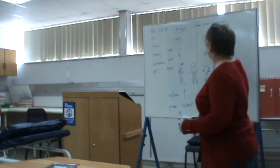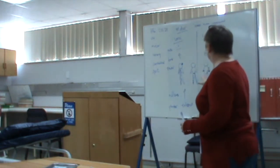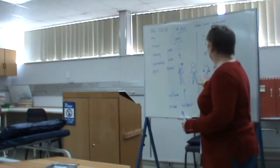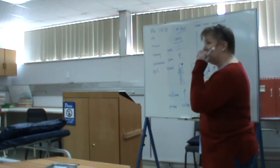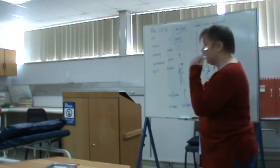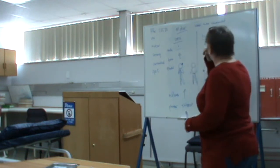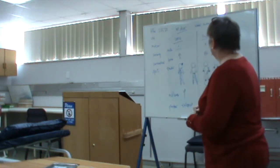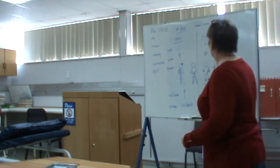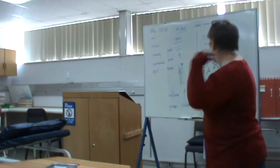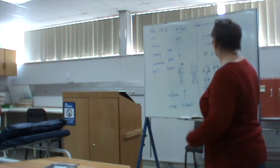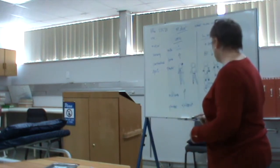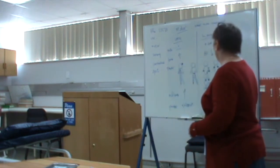Lower motor neuron lesions show low tone and atrophy. The distribution of weakness is either proximal or distal, or the patient fatigues. Reflexes in neuropathy are absent. Myopathy reflexes are usually normal unless longstanding, when they also disappear. With neuromuscular junction disease, reflexes may fatigue — they get smaller and smaller with repeated testing.